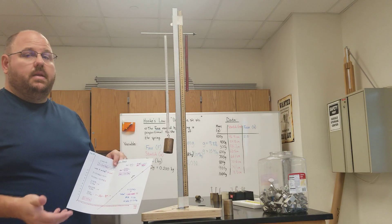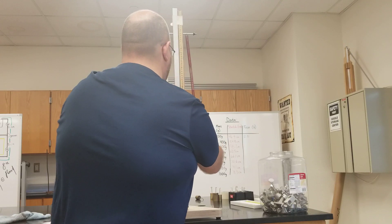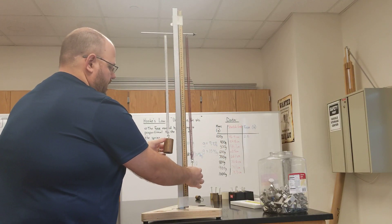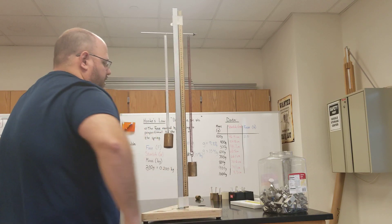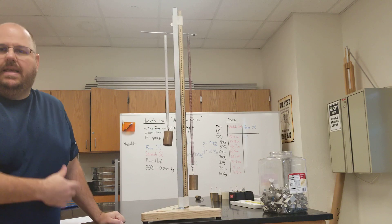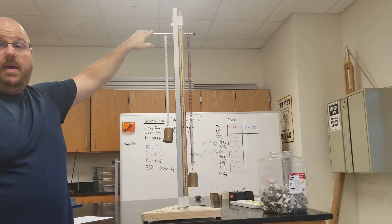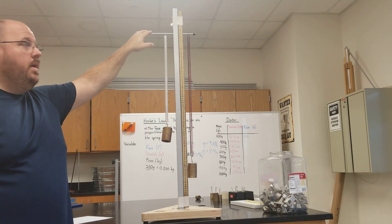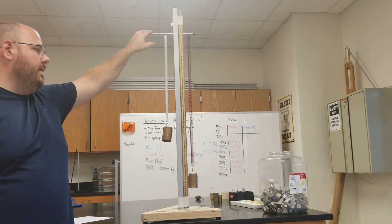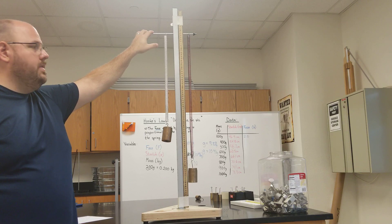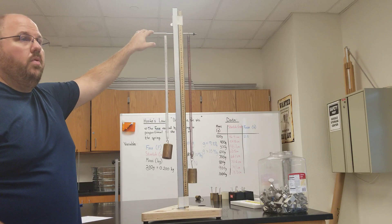Sometimes the y-intercept is important, and we'll see examples of that later. One last cool thing to illustrate with springs: if I put the one kilogram weight on and displace the spring a little bit and let it go, it will oscillate — moving in a regular repeating pattern. That regular repeating pattern is really useful. I can use it to tell time, which is basically what's going on in a normal watch, and I can use it to model other things that repeat over time, like the motion of the planets.